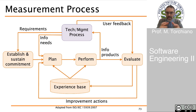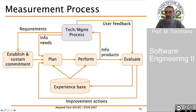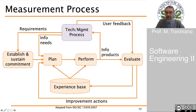To organize the measurement process meaningfully, the starting point is a technical or management process that defines requirements and commitments for measurement. This process also defines the information needs, which are the starting point for planning a measurement activity. Planning is also informed by the general commitment in the organization. After planning, we perform the measurement, producing a set of information products. These information products are fed back into the technical or management process to help in taking decisions.